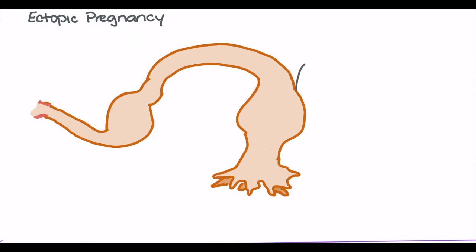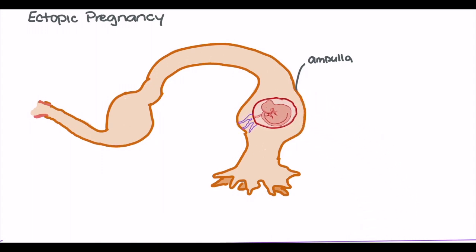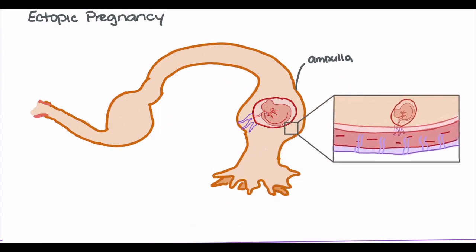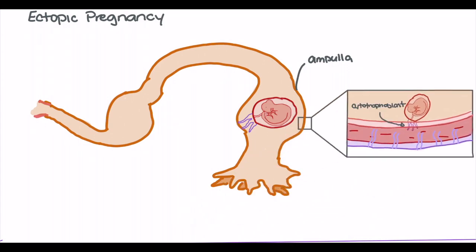We can now take a closer look at the fallopian tube to understand what's happening as our blastocyst implants into the fallopian tissues, specifically the ampulla, as this is the most common site. As implantation occurs, cytotrophoblasts will be released. These cytotrophoblasts play a role in remodeling the spiral arteries of the uterus to increase blood supply to the blastocyst. Because no endometrial arteries exist in this case, the cytotrophoblasts instead begin remodeling the epithelial vessels of the fallopian tube. This can occur in any area where the blastocyst may implant in ectopic pregnancy.